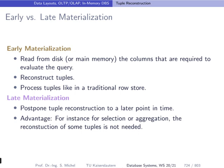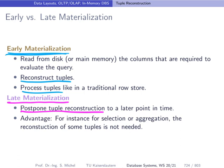There is an interesting concept called early or late materialization. In early materialization, when a query accesses certain columns, you read the different columns, join them to reconstruct the tuples, and then process them like in a traditional row store. However, this can be wasteful. In late materialization, tuple reconstruction is postponed to a later point in time. Particularly for selection or aggregation, late materialization can have big gains over early materialization.